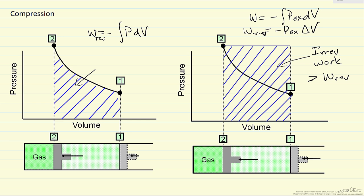For compression, the numerical value of work we must put in is larger for an irreversible process. For expansion, the numerical value of work we get out is smaller for an irreversible process.